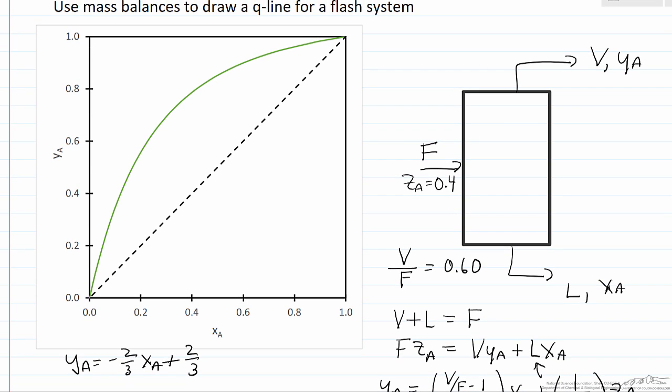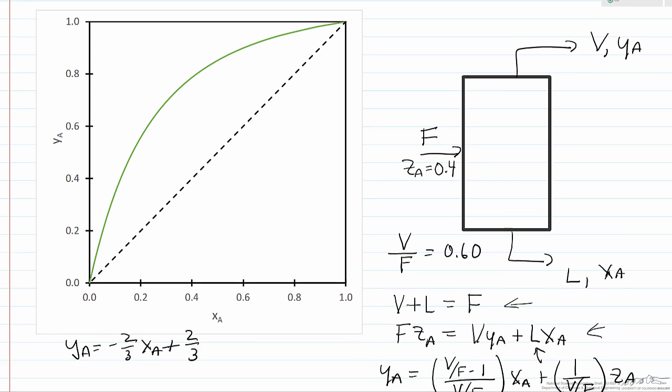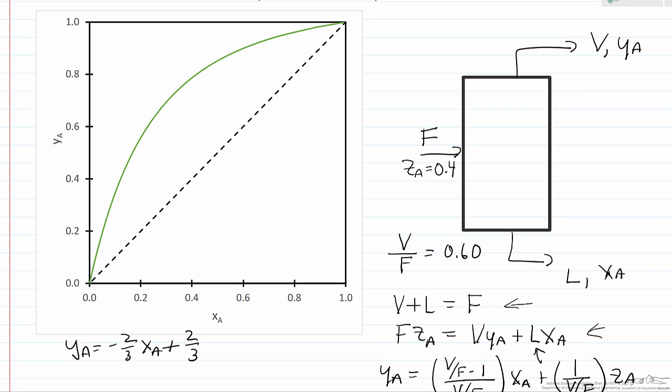And it's easy to see if we look at this equation, for example, if XA equals YA equals ZA, the value we're using, 0.4, then of course we get back to this equation, which we know is satisfied. And so that means that one point on this line is 0.4, 0.4.